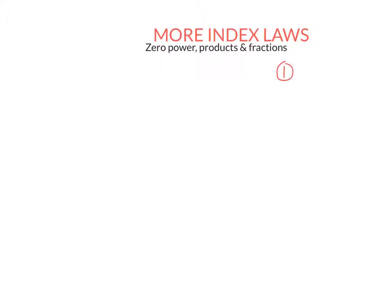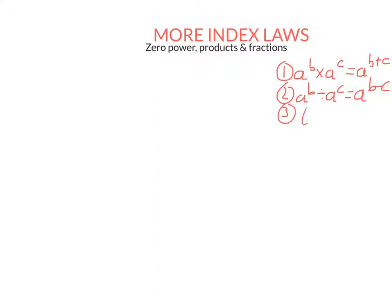In the previous lesson, we learned the first three index laws. If we have a to the power of b, we call a the base and b the power or index. If we multiply bases together, we keep the same base and add the powers. If we divide bases, we keep the same base and subtract the powers. The third one was the power of a power rule: you keep the same base and multiply the two powers together. The index laws we'll add today actually come from these three index laws.